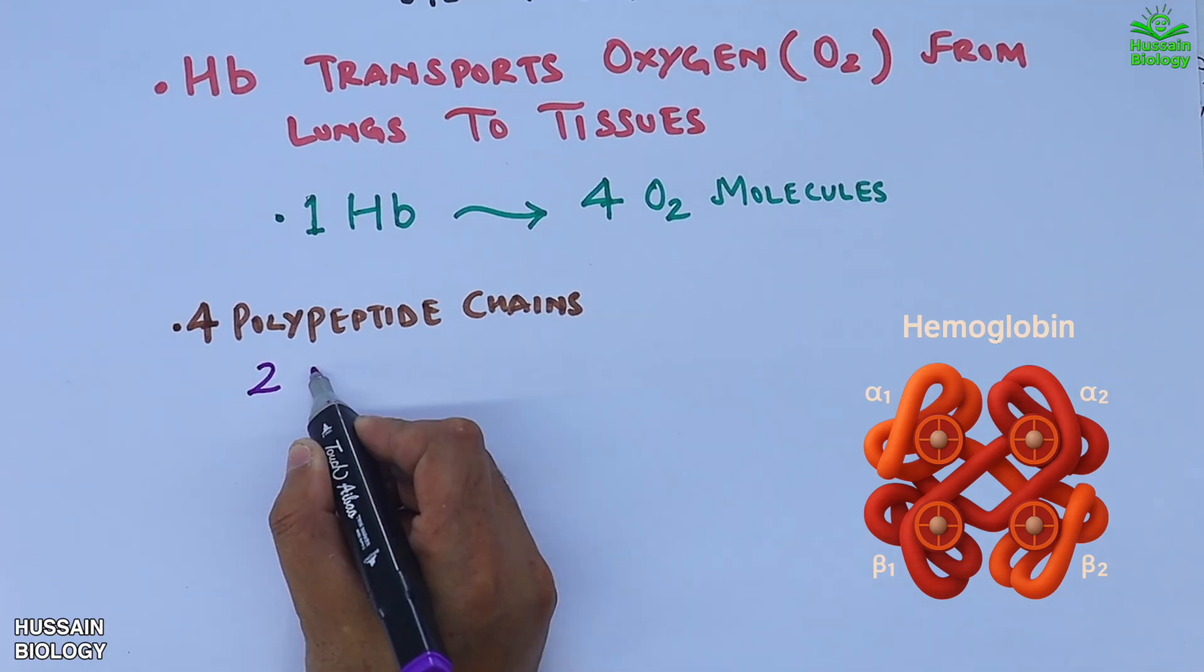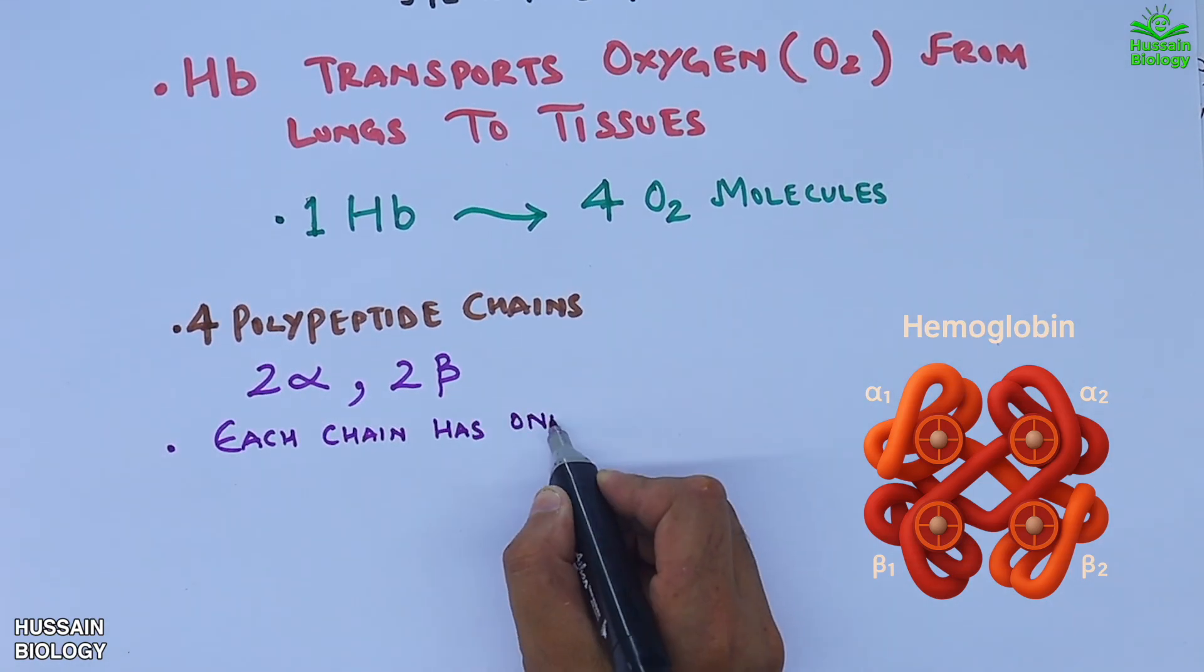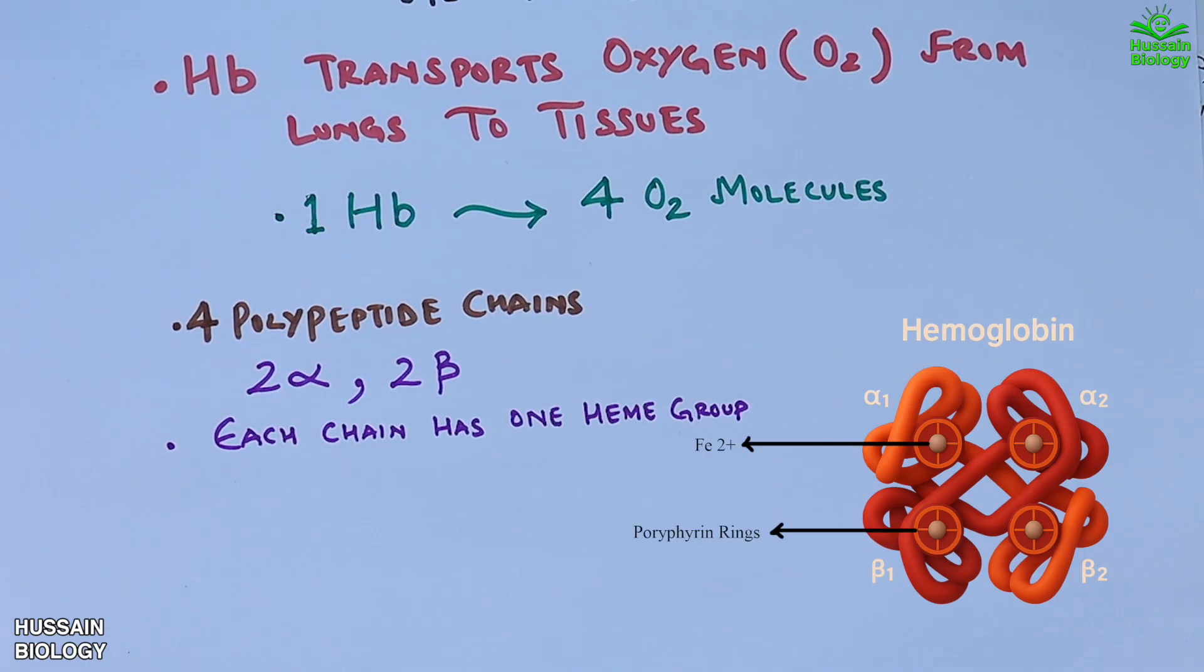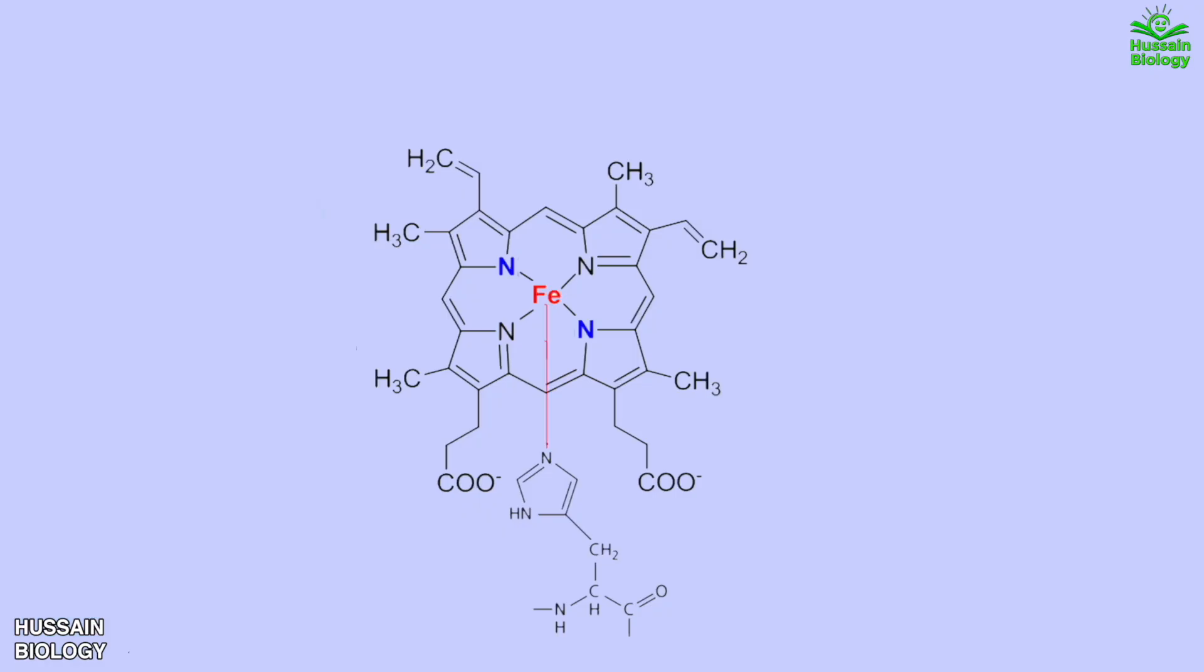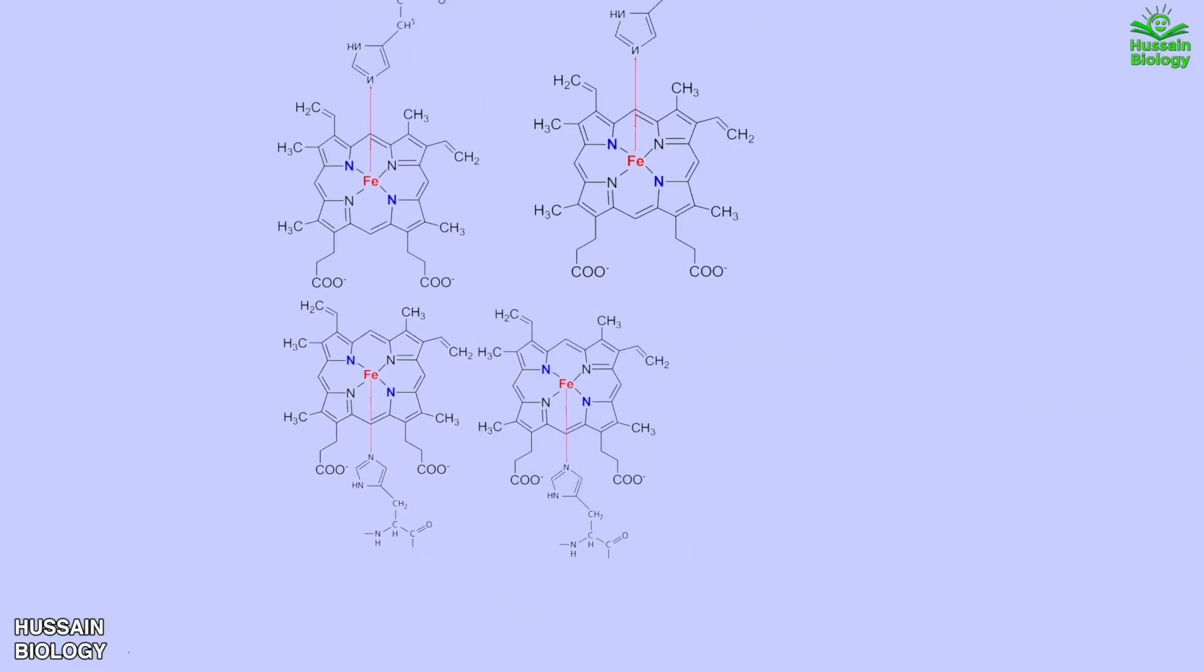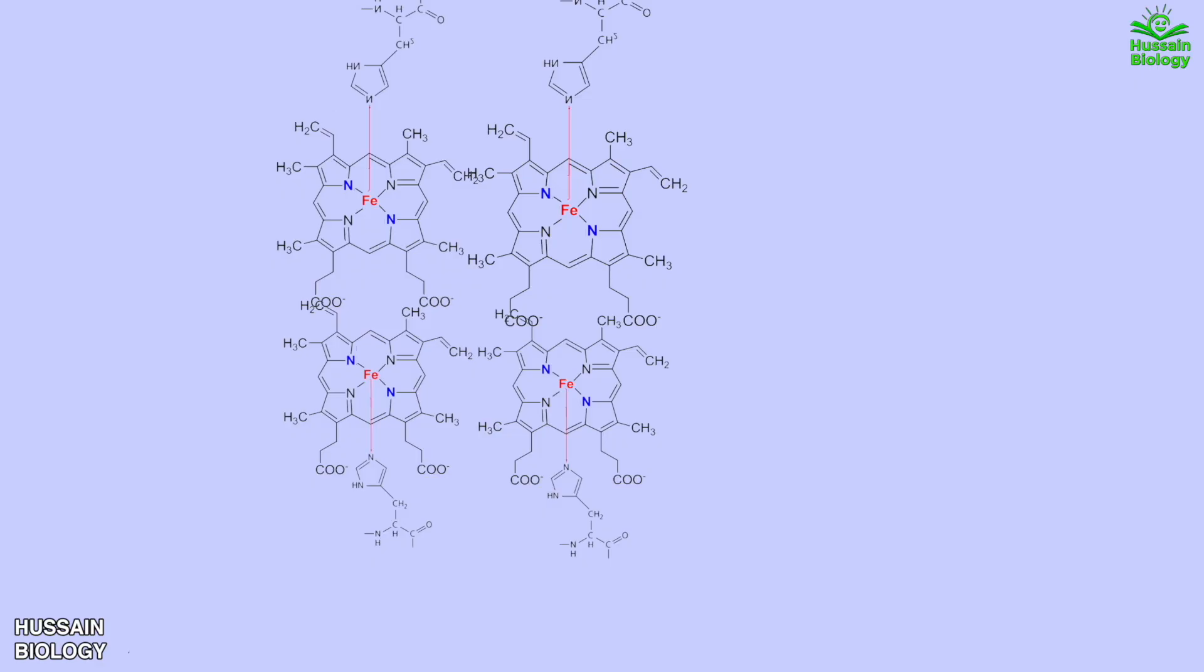Here we have the hemoglobin molecule. It has four polypeptide chains, and each chain has one heme group, a porphyrin ring, and one iron atom. Looking at the molecular structure, we have four hemoglobin subunits forming a tetramer. The oxygen binds to the iron atoms in all four subunits.